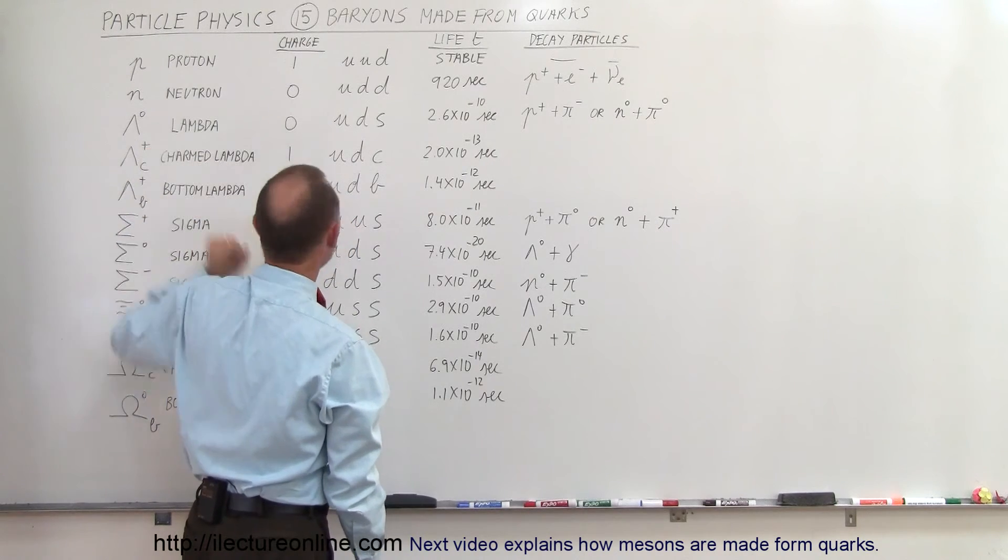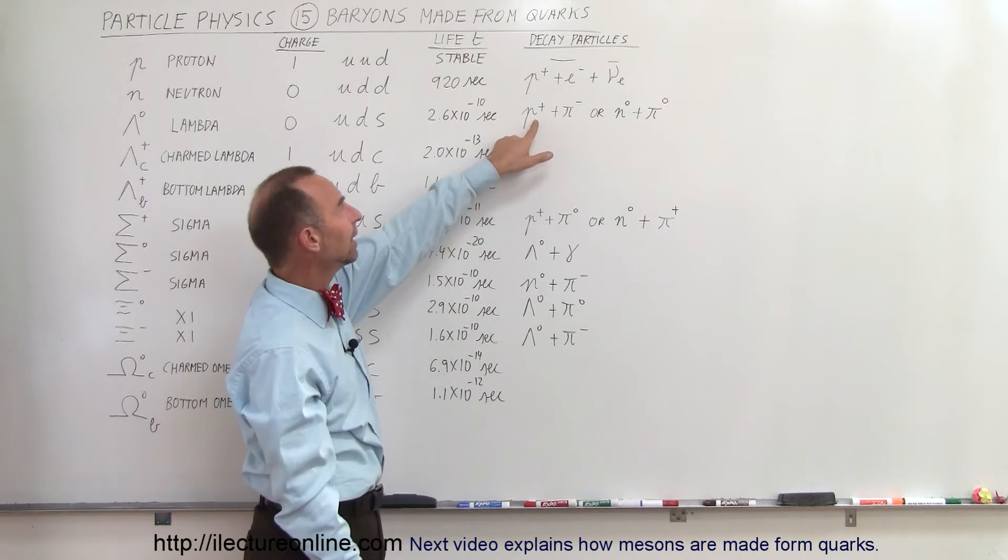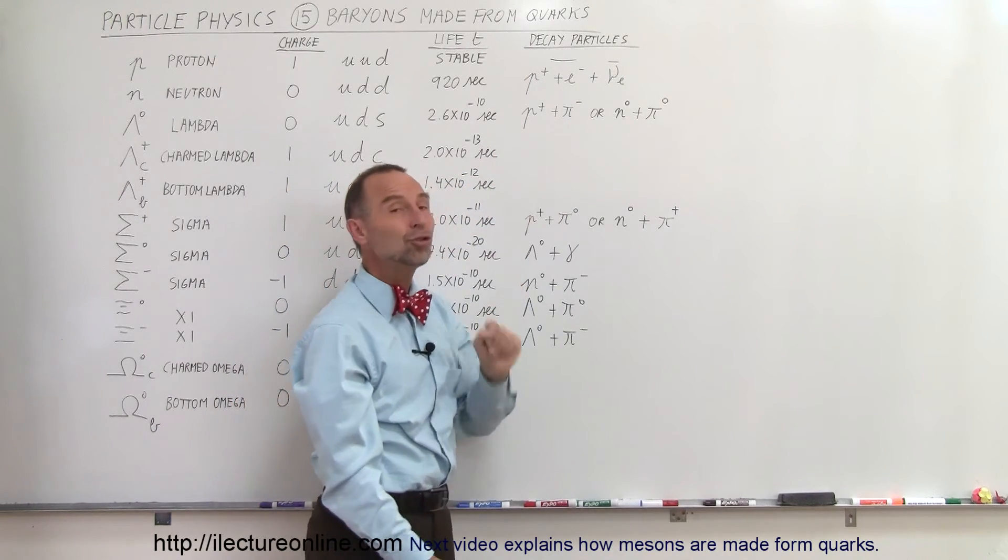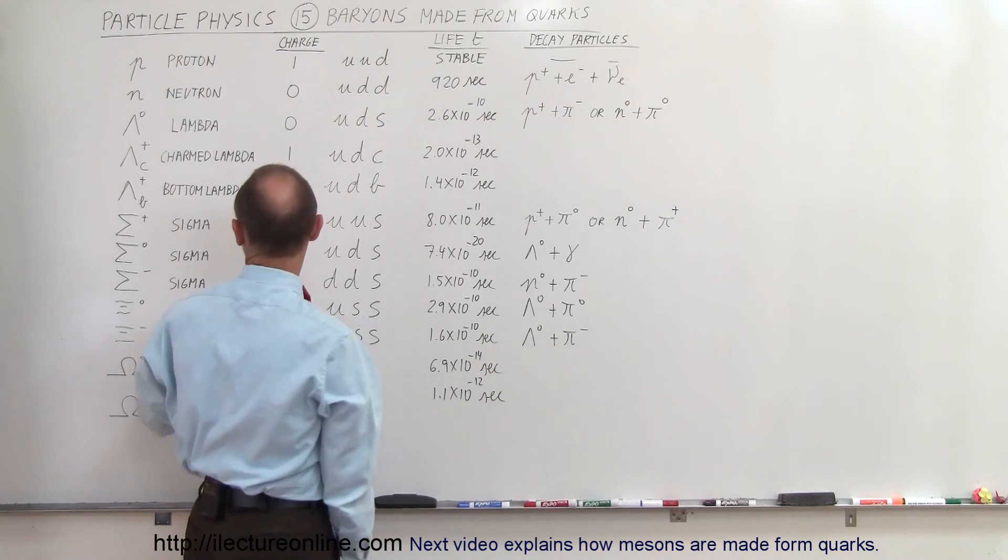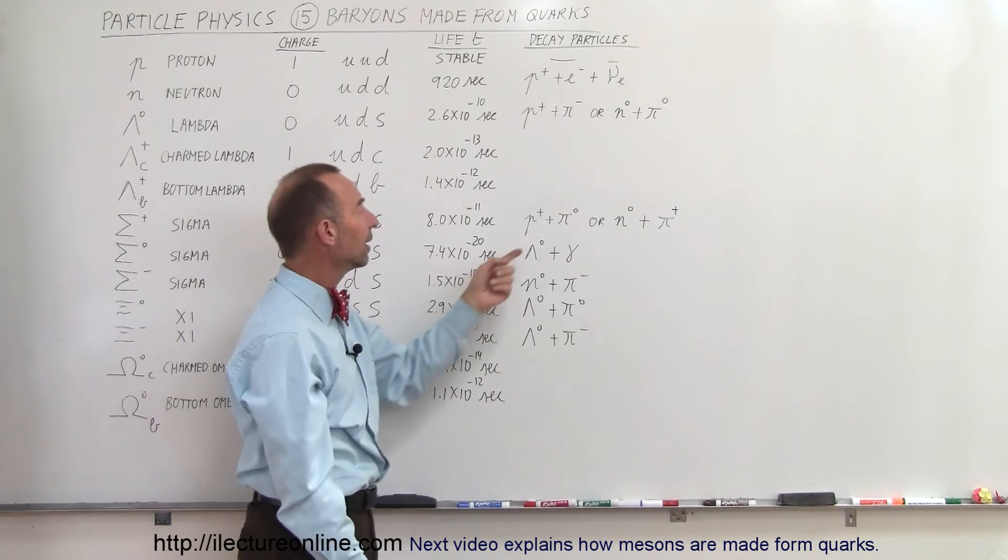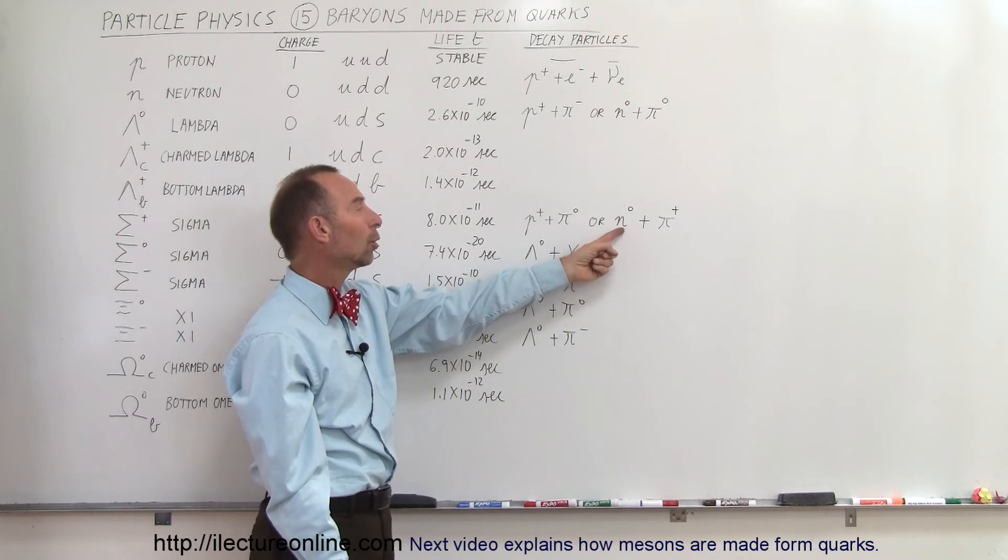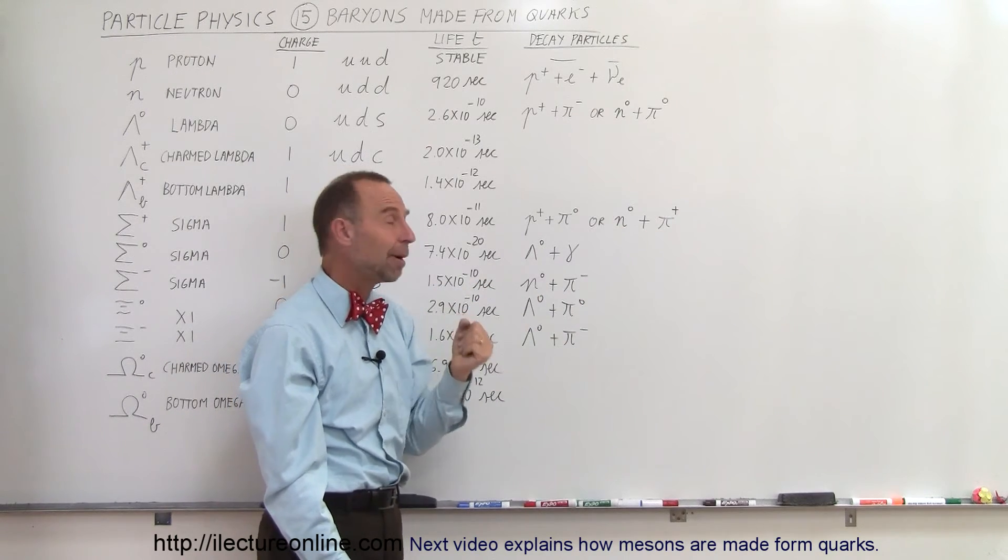If we take a look at a lambda particle, we can see that it decays into a proton and a negative pion, or into a neutron and a neutral pion. If we take a look at a sigma, a positive sigma, it decays into a positive proton and a neutral pion, or a neutron and a positive pion.